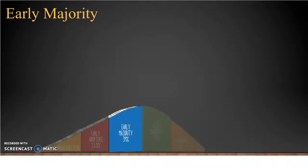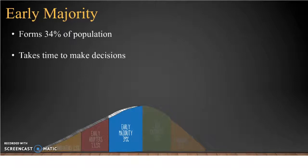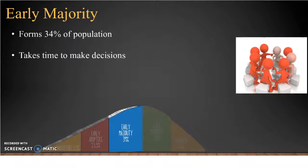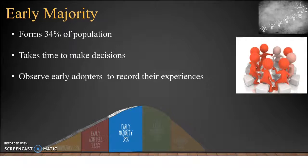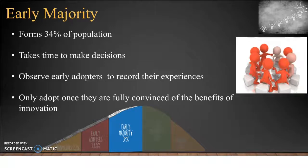Rogers identifies about 34% of the population as early majority. They deliberate for some time before completely adopting a new idea. Their innovation decision period is longer than that of an innovator and early adopter. They observe early adopters to get feedback about the innovation. They seldom hold any leadership positions, and only adopt an innovation once they are fully convinced about its benefits.